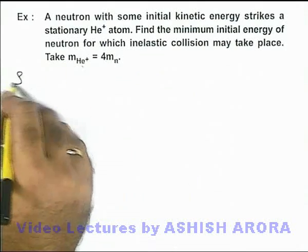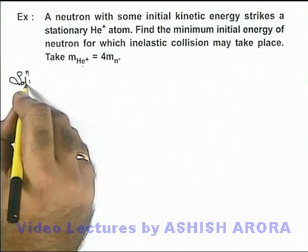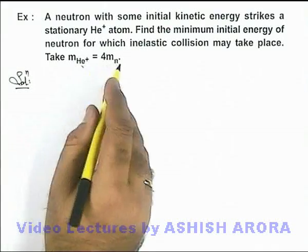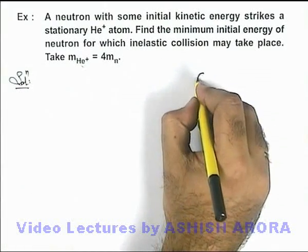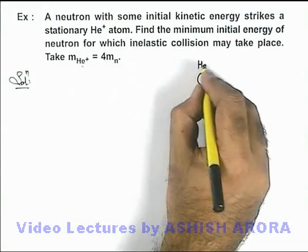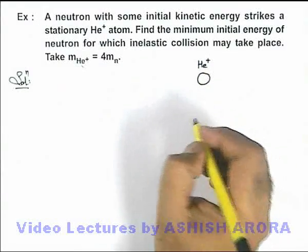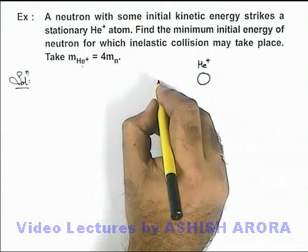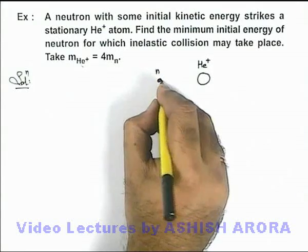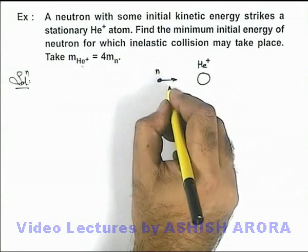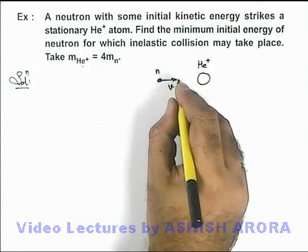We need to take here the mass of helium is equal to 4 times that of the neutron. If we consider this helium plus ion or a hydrogenic atom, and this is the neutron which is coming with some initial kinetic energy with a speed v, it strikes.